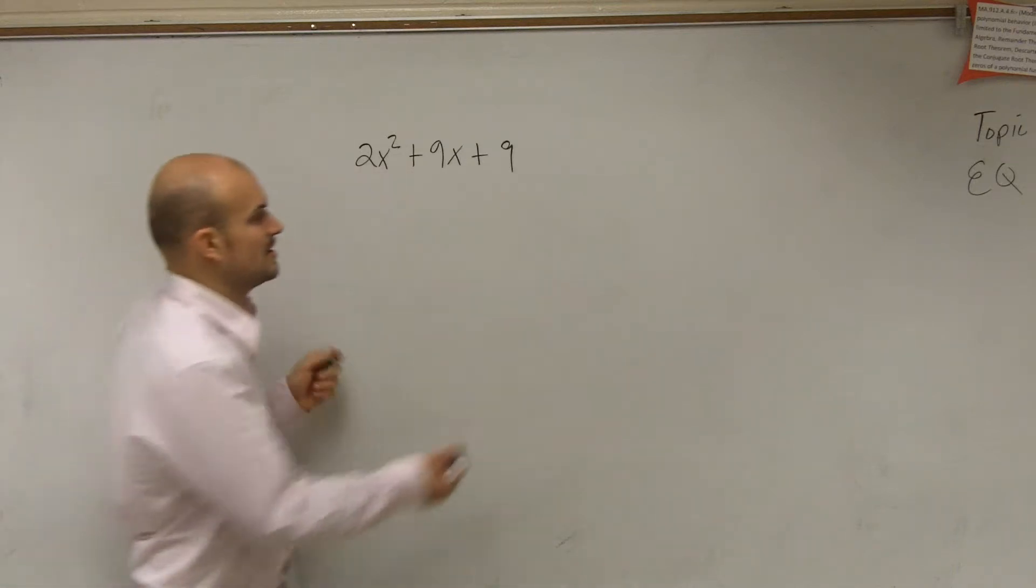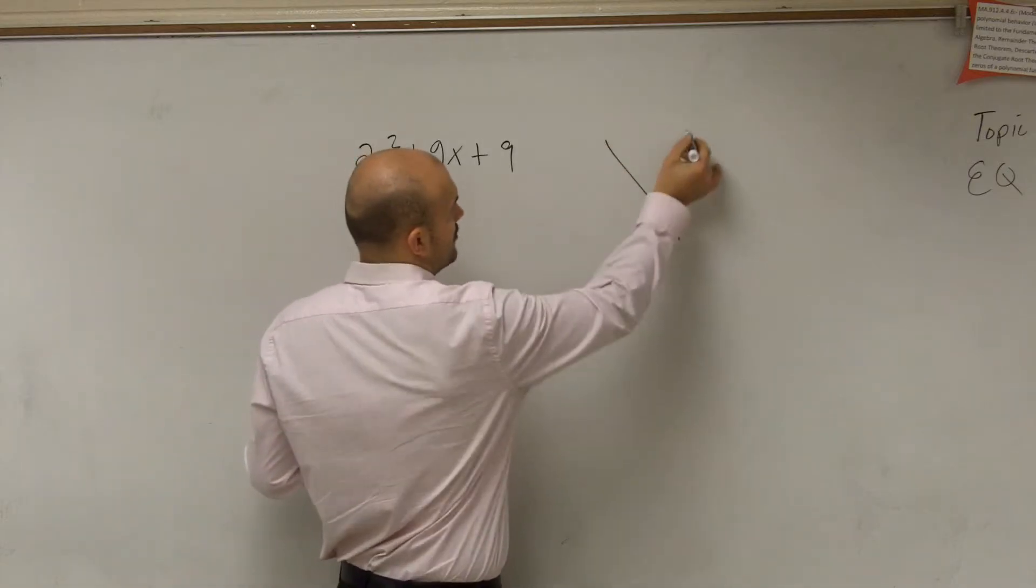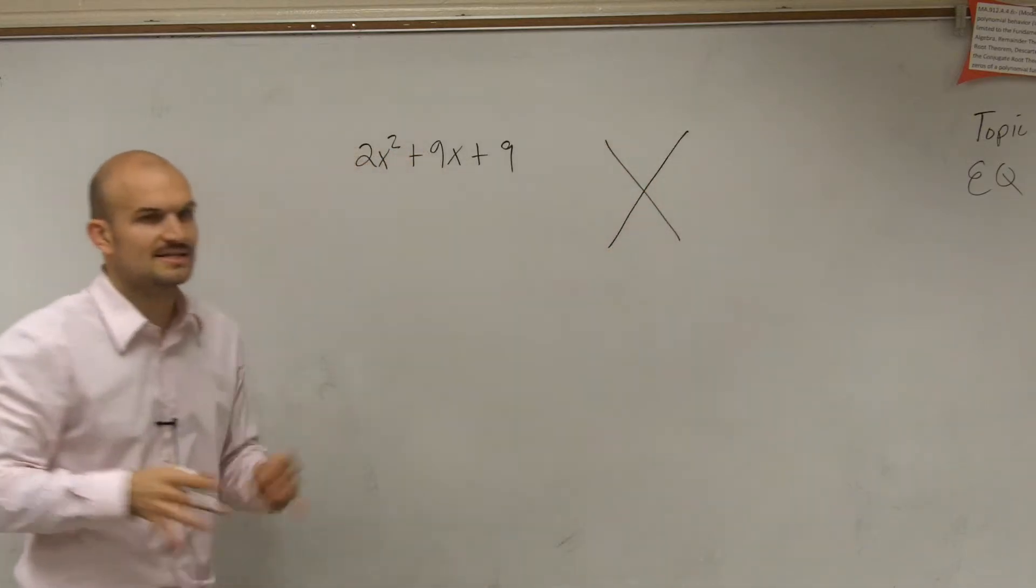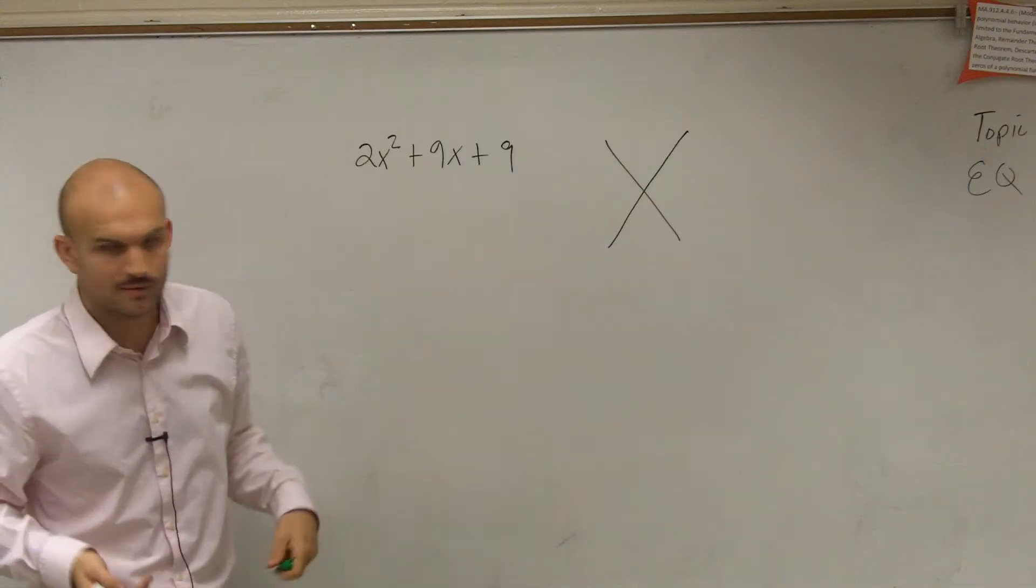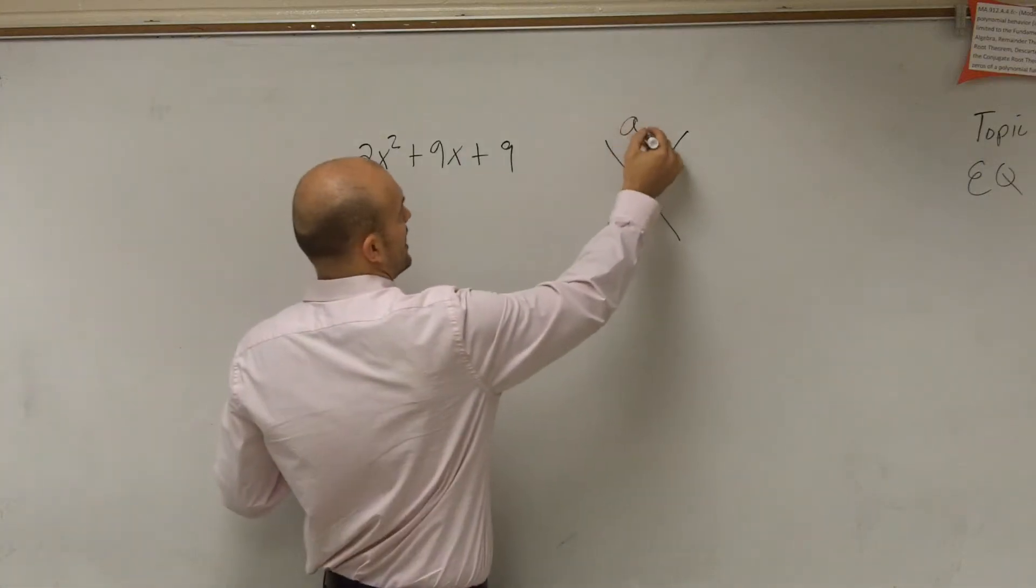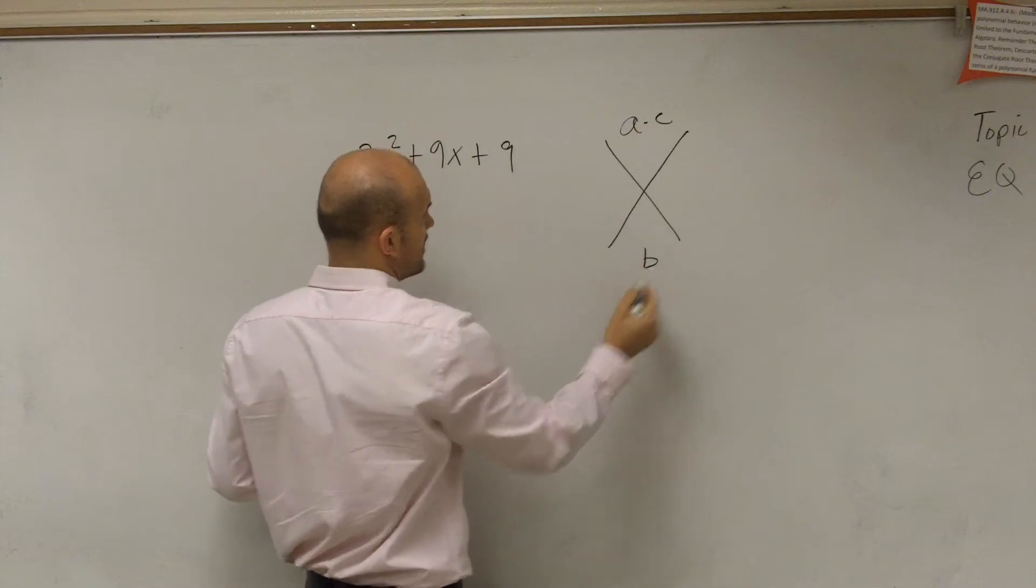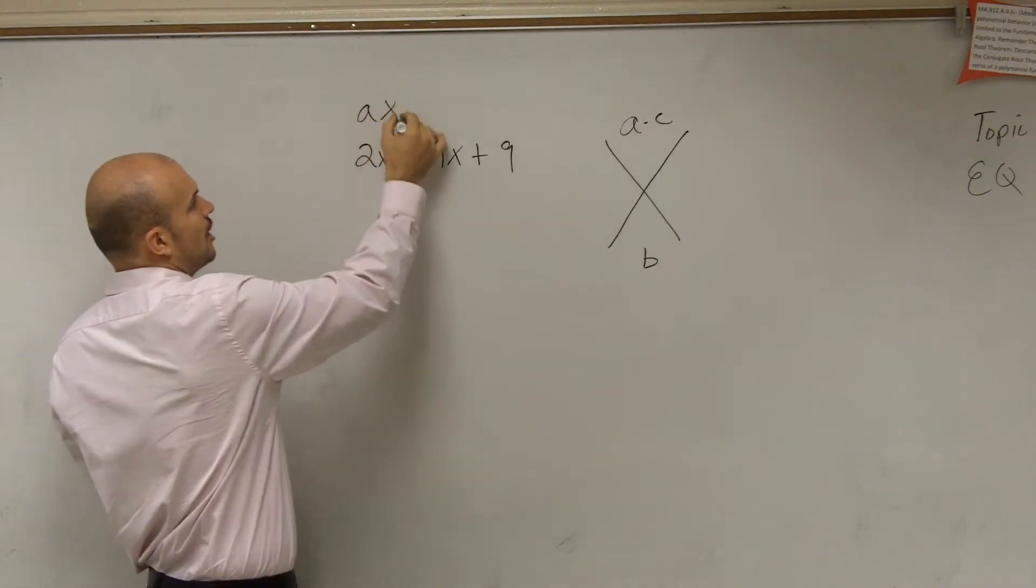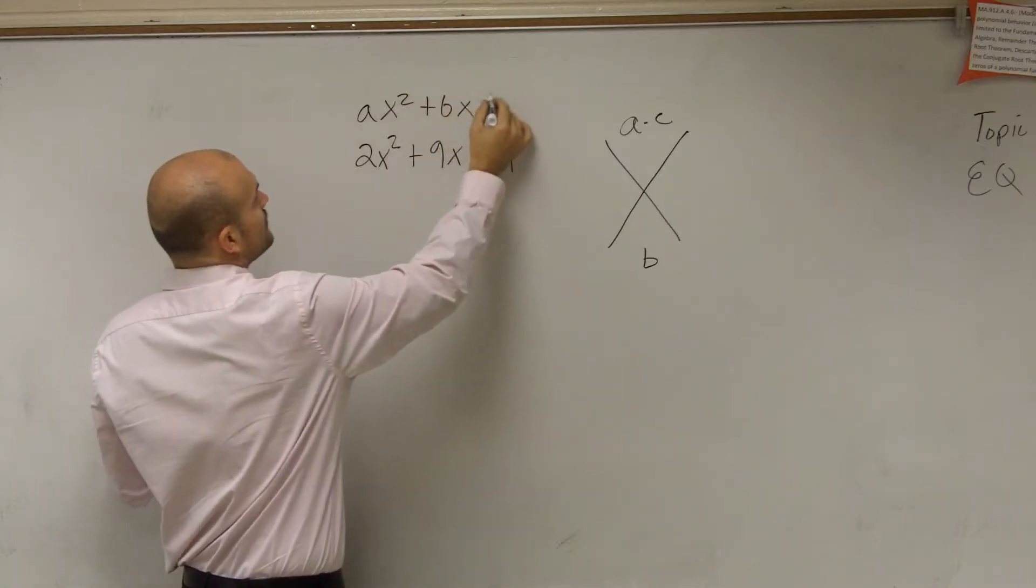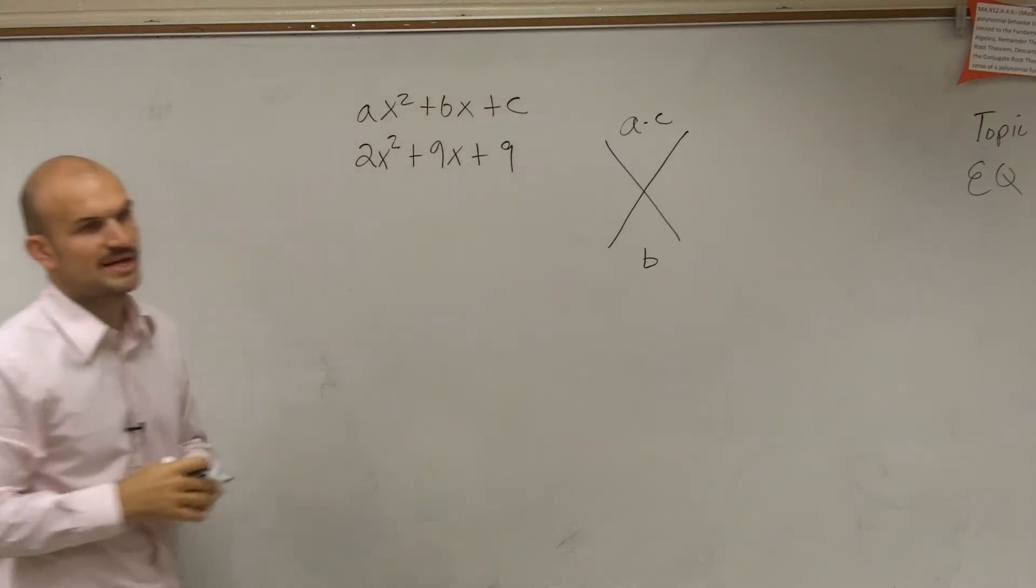So then I'm going to look into factoring a trinomial. We worked with some techniques on how we can break it up into two factors. One of the methods is to take your a times c and then add it to find out what your b. Remember, all quadratics can be written in the form of ax squared plus bx plus c.